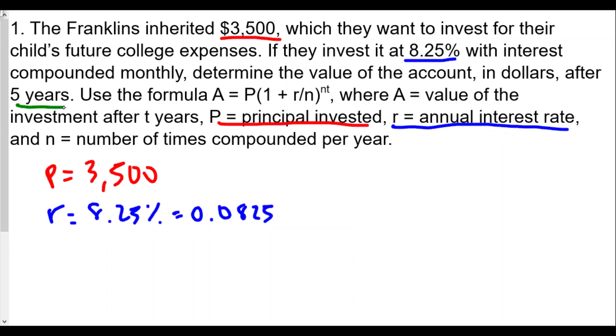t in this case is five years. The last part is going to be the n value. n equals the number of times compounded per year. They say interest compounded monthly, so since monthly means 12 months a year, our n value is 12.